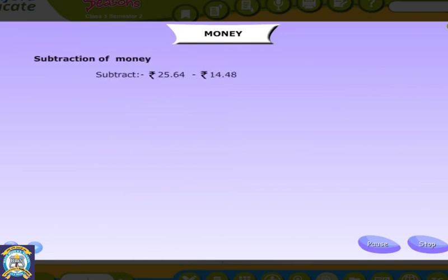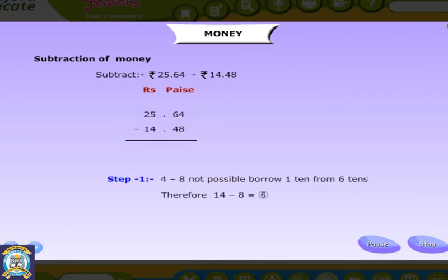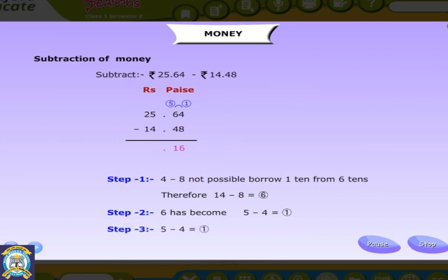Subtraction of money. We subtract money the same way as we subtract numbers. See the example given below. Step 1: 4 minus 8 — not possible. Borrow 1, 10 from 6. Therefore 14 minus 8 is equal to 6. Step 2: 6 has become 5. 5 minus 4 is equal to 1. Step 3: 5 minus 4 is equal to 1. Step 4: 2 minus 1 is equal to more. Thank you.